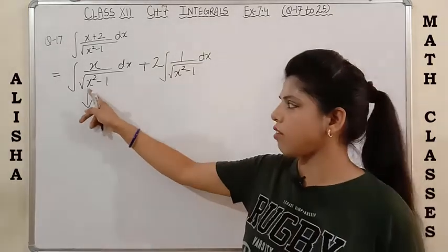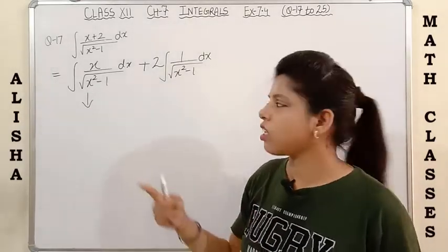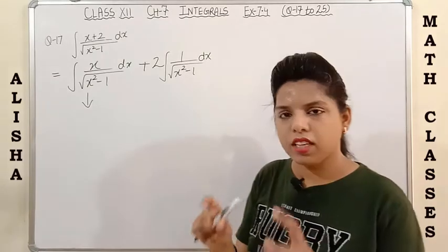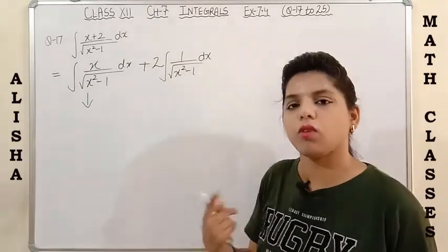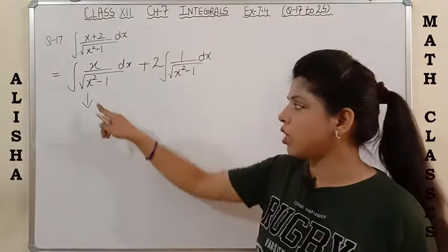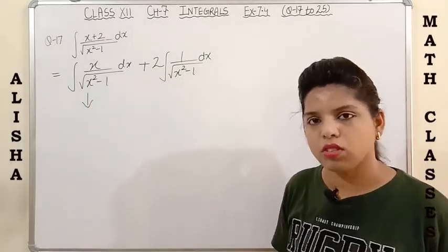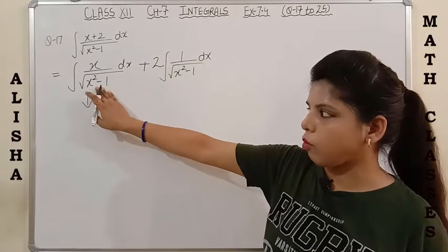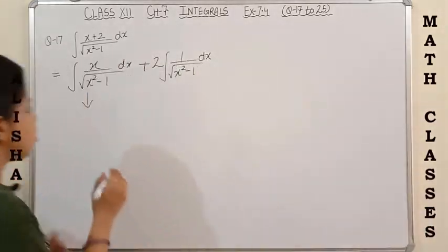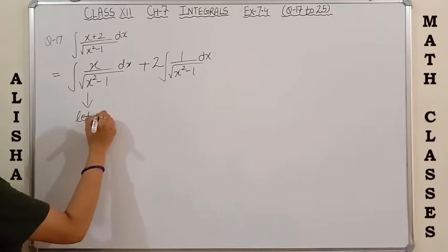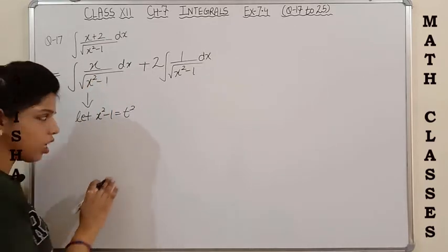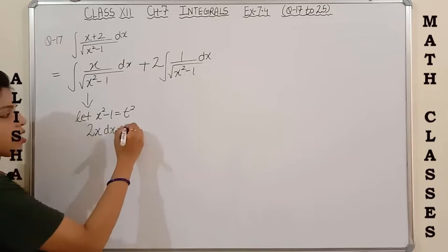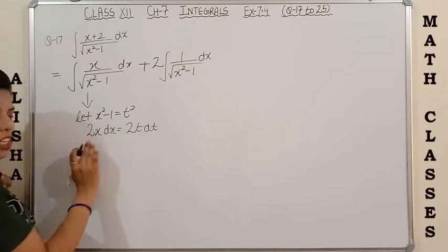For the first integral, we have a quadratic equation in the square root and its derivative in the numerator. I am putting x²-1 equal to t² because whatever is inside the square root I put equal to t². Let x²-1 = t² in this integral. Differentiating both sides: 2x dx = 2t dt.